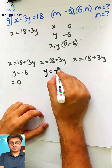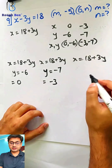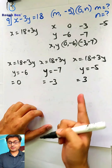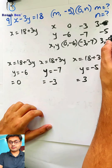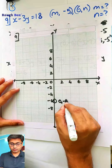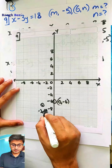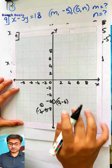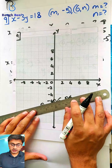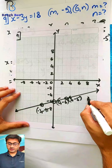Assuming y as minus 7: minus 21 plus 18 is minus 3. So the point is (minus 3, minus 7). Assuming y as minus 5: minus 15 plus 18 is 3. So y is minus 5 and x is 3 — point (3, minus 5). Let's plot sum number 9: (0, minus 6) on the y-axis, (minus 3, minus 7) here, and (3, minus 5) here. I'm sure they are collinear. Let's draw a long line. Write down the equation: x minus 3y equals to 18.